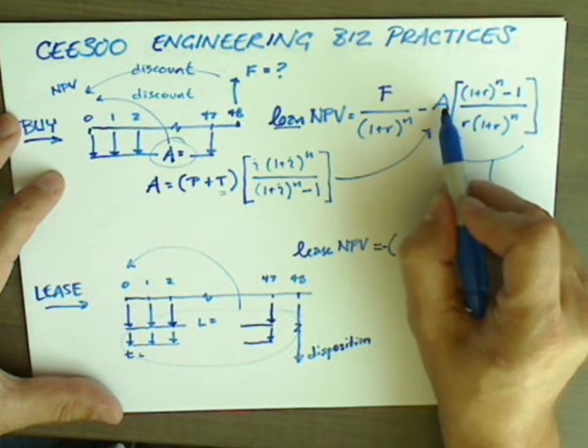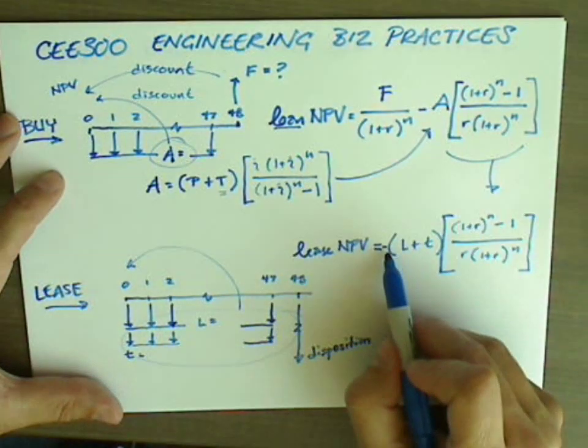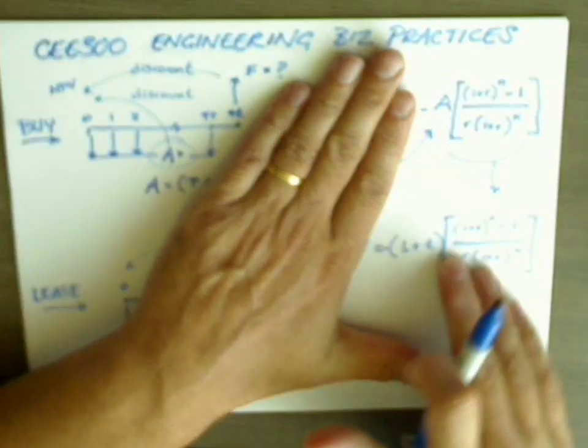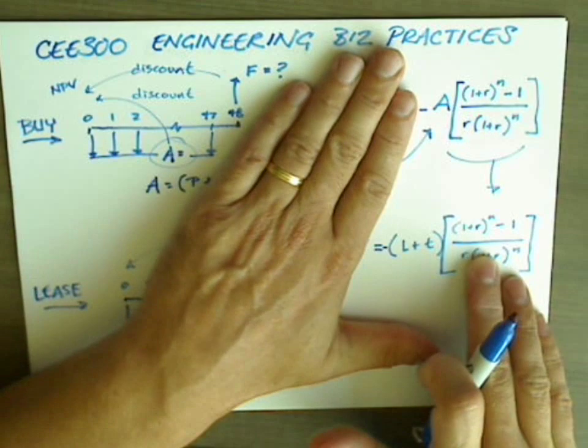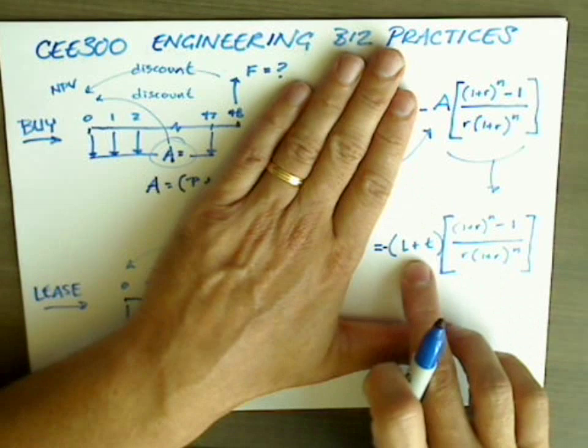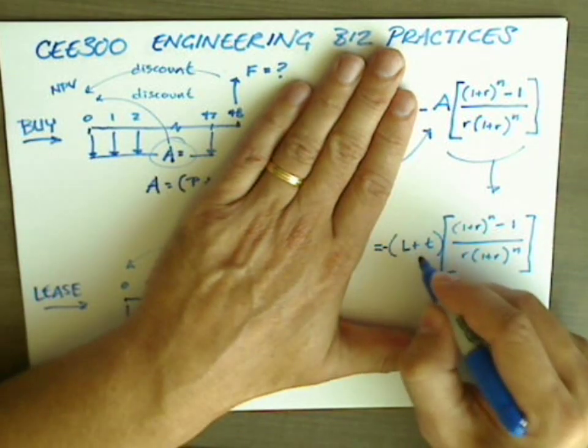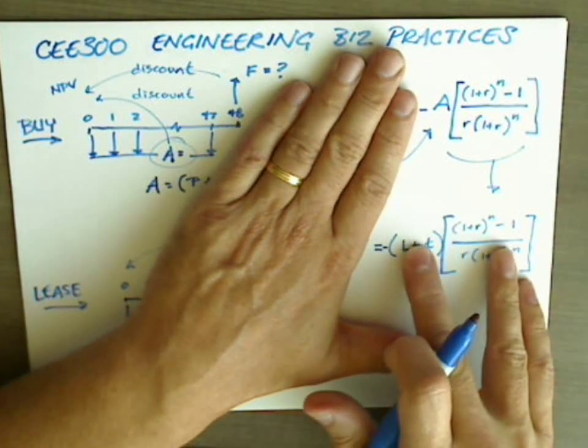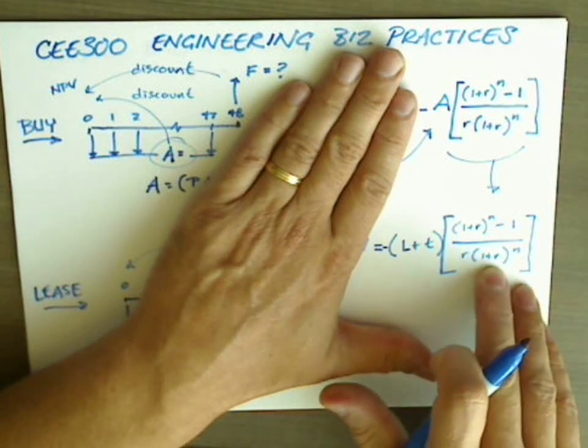And if A is larger, keeping in mind that these are both negative, you can compare just these two terms since the present worth factors are identical. A is greater than the sum of L and T, you know that this term is more negative than this term. That makes leasing look like a good option.